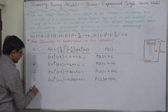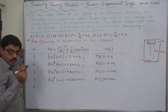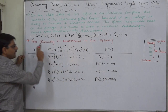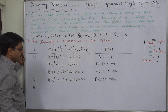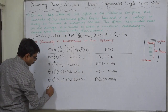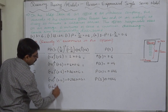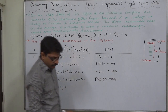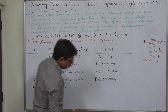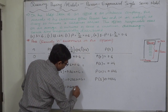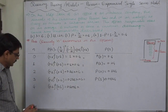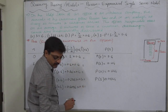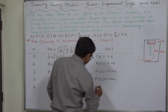Now suppose n takes the value 4. The probability of exactly four customers in the system is the utilization rate raised to 4, multiplied by the idle rate. 0.6 raised to 4 gives 0.1296, and 0.1296 into 0.4 gives 0.05184.